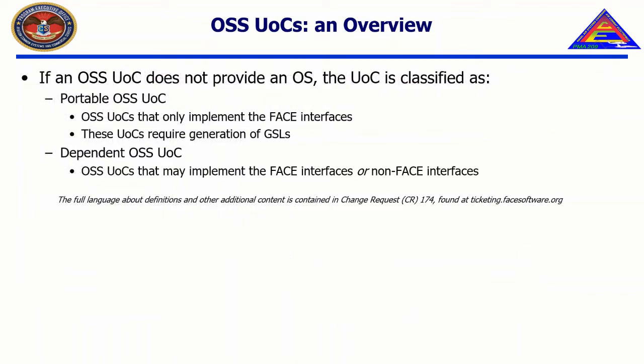If the OSS UOC under test does not provide an operating system, the UOC is classified as a Portable OSS UOC or a Dependent OSS UOC. These classification definitions are contained in CR174 at ticketing.facesoftware.org. In short, these classifications define what APIs the OSS UOCs may use to access the operating system — either only the FACE OSS interface, which is a Portable OSS UOC, or non-FACE OSS interfaces, which is a Dependent OSS UOC.